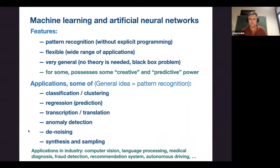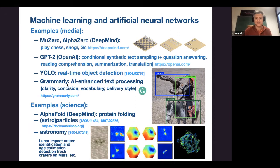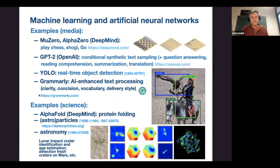It has already been used to play games like Go — the champion resigned after DeepMind won many competitions. It is used in commercial tools like Grammarly for enhanced text processing, showing clarity, concision, and vocabulary. Most importantly, it is used in science: recently there was a big breakthrough in protein folding — one of the greatest problems in biology. It is also used in astroparticle physics for classification of gamma rays, cosmic rays, and different types of galaxies.